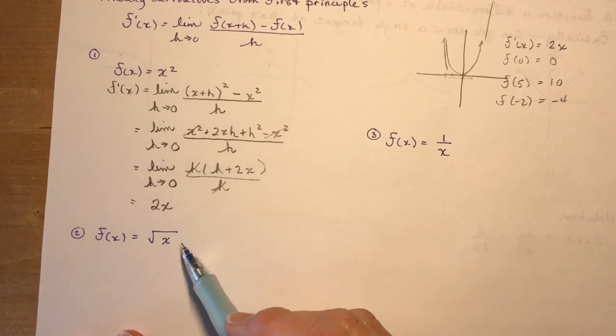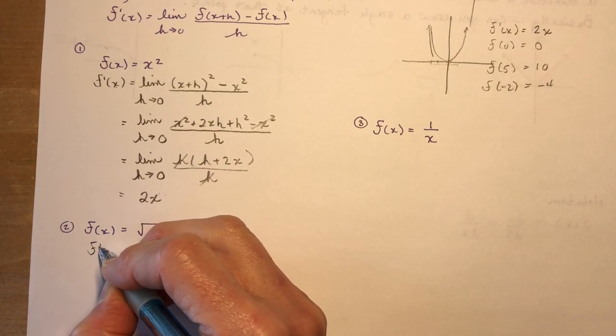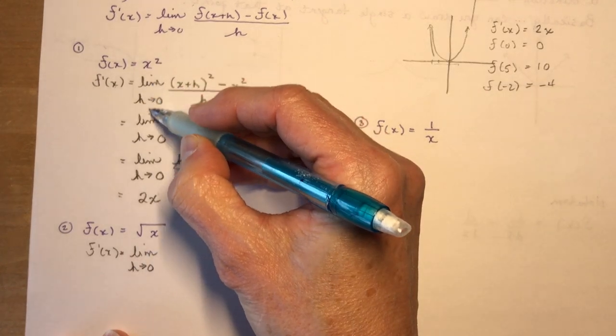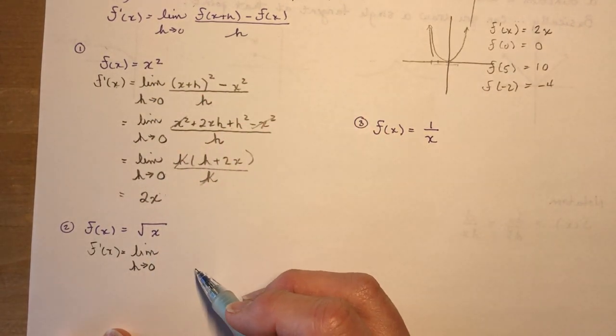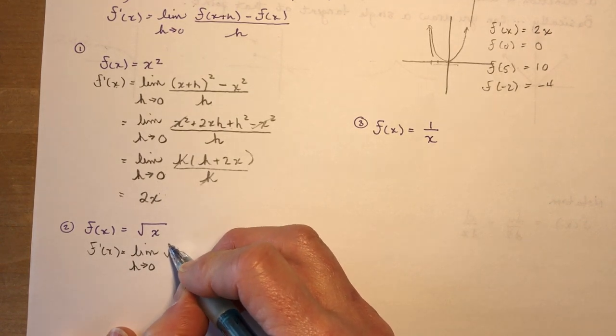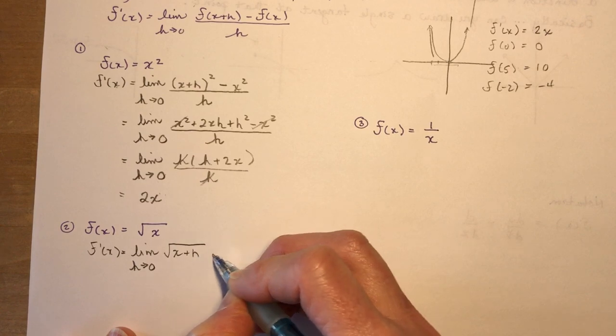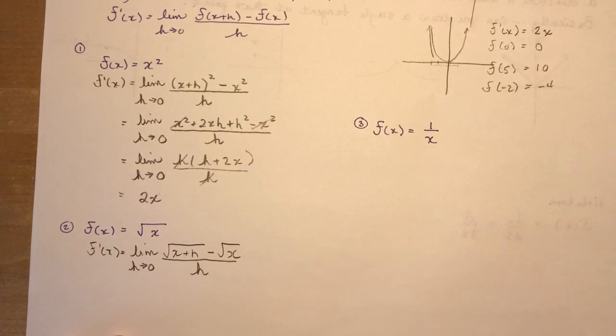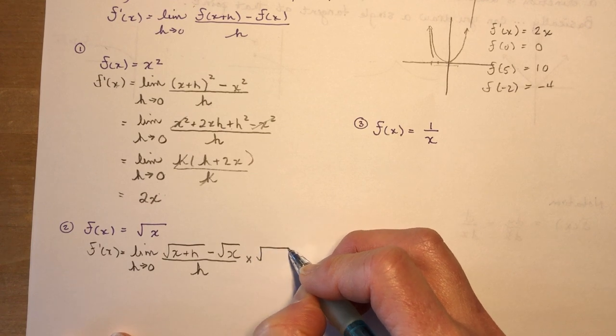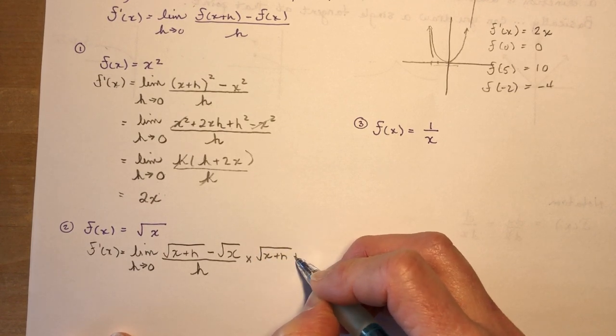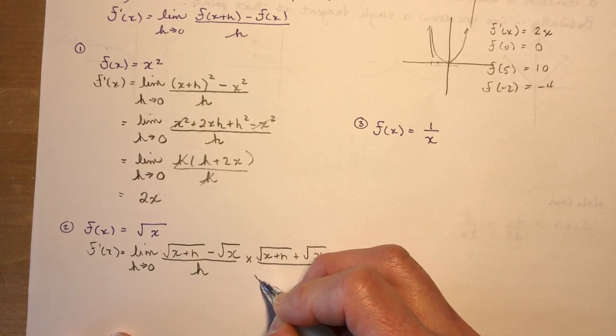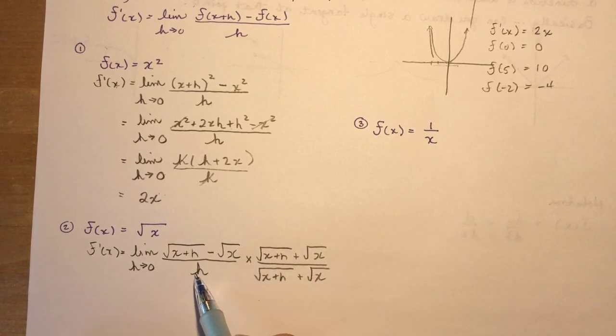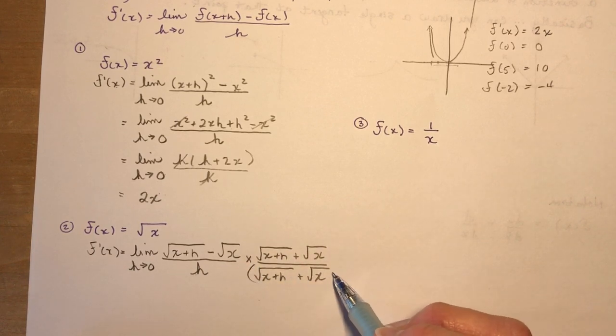Let's look at what you would do with the root of x. Same thing. I'm going to write out f prime x equals the limit. Don't forget your limit, and keep it going all the way down until you plug in that value. So f at x plus h is the square root of x plus h minus the square root of x over h. How do I simplify this one? We multiply by the conjugate.